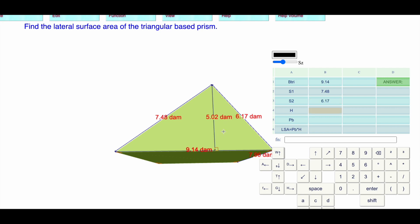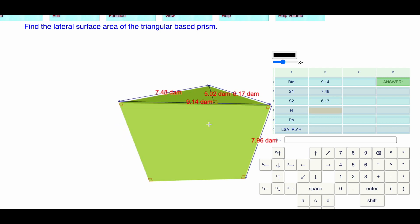The height of the prism, not the height of the triangle. You don't need to know the area of the triangle to figure out the lateral surface area. The height of the triangle 7.96. The perimeter of the base is the base of the triangle added to the sides of the triangle.